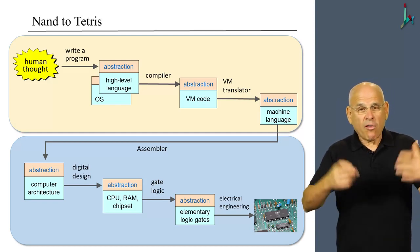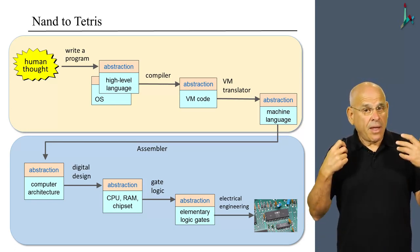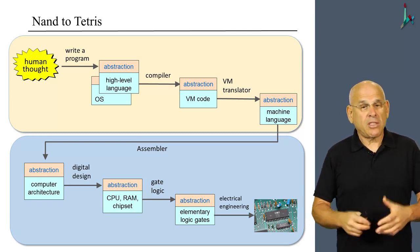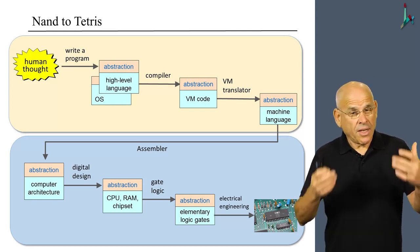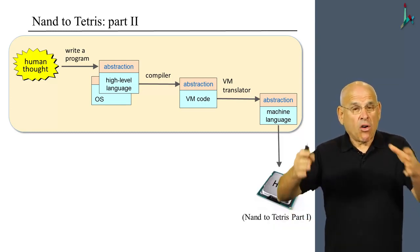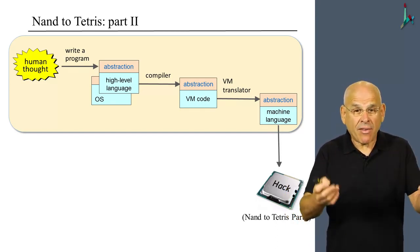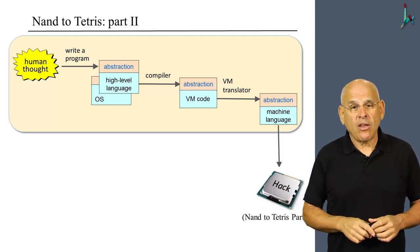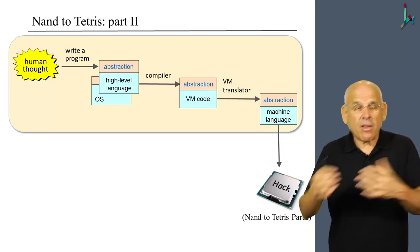We decided to divide this overall journey into two different parts, two different courses. In NAND to Tetris part one, we built the hardware platform, which is the host computer on which we can actually execute programs. In this course, in part two, we build the elaborate software hierarchy that sits on top of the host hardware platform and enables us to write programs in a high-level language like Jack, Java, or Python, and then translate them all the way down into machine language, generating code that can actually execute on the platform we built in part one.